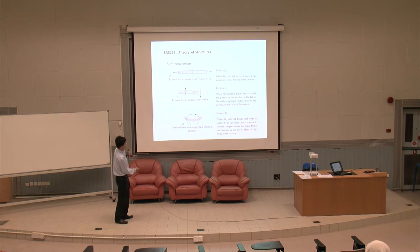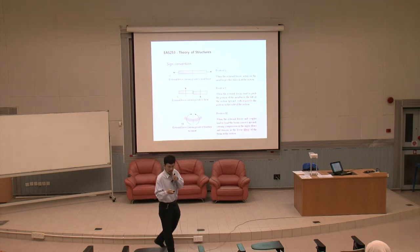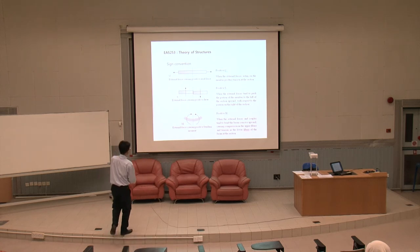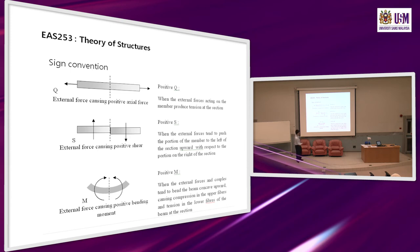Positive bending moment — this is one important thing we will use later — means the beam will bend concave upwards at that section. If you get positive M, the beam tends to bend upward, meaning the top part of the section will be in compression and the bottom part will be in tension.